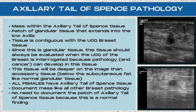Let's talk about the axillary tail of Spence and breast pathology. The axillary tail of Spence is a patch of glandular tissue that extends into the low axilla and is contiguous with the upper outer quadrant breast tissue. Since this is glandular tissue just like the glandular tissue of the breast, it should always be carefully interrogated whenever the upper outer quadrant breast is evaluated, because pathology such as cancer can develop in this tissue. You should scan the upper outer quadrant and then travel up into the lower axilla to cover that little tail of extended tissue. This tissue is going to be deeper on the ultrasound image — below the subcutaneous fat, just like normal glandular tissue.